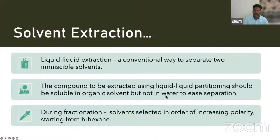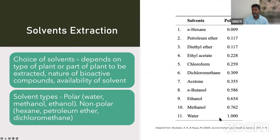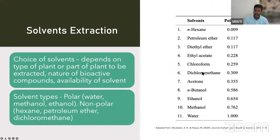Here you can see different solvents with different polarity — water being the highest polarity in nature, and hexane being the lowest, non-polar solvent. In between there are intermediates like petroleum ether, diethyl ether, ethyl acetate, chloroform, dichloromethyl acetate, acetone, and n-butanol. These are the various solvents generally used in extraction of phytochemicals.